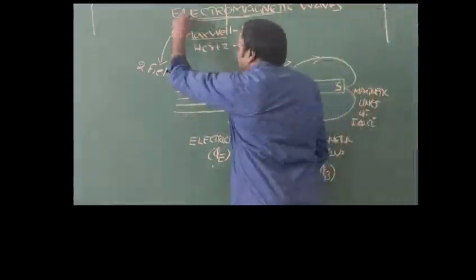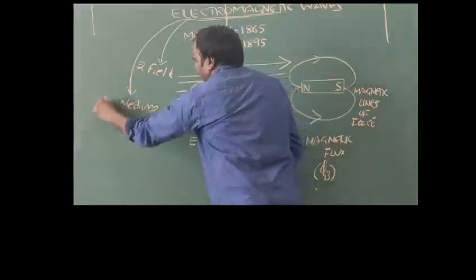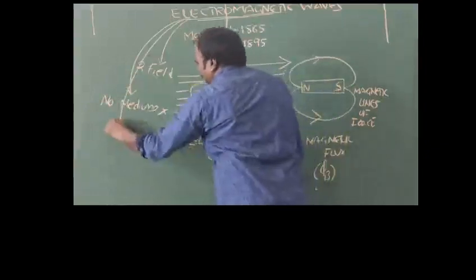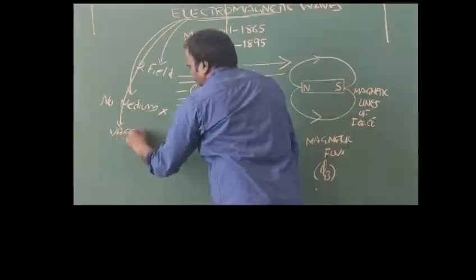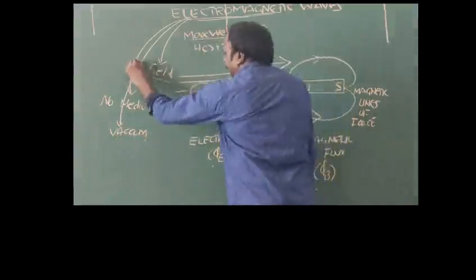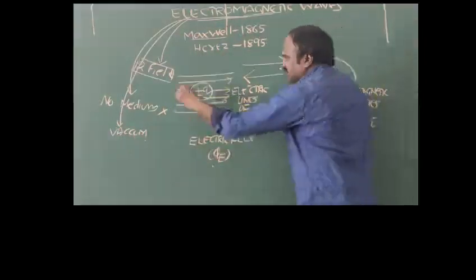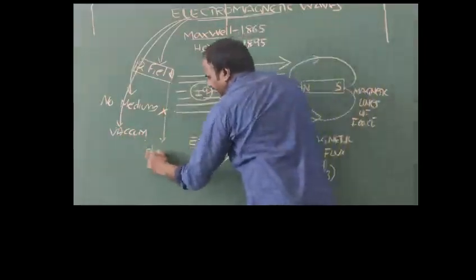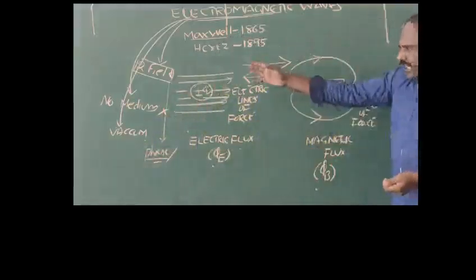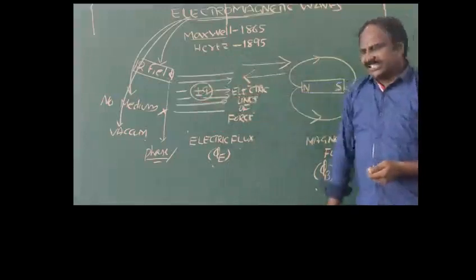These electromagnetic waves do not require any medium. Even they can travel through vacuum. Even though electric and magnetic fields are perpendicular to each other, these two fields are always in phase. If one field is acting along the x-axis, the second field is acting along the y-axis.